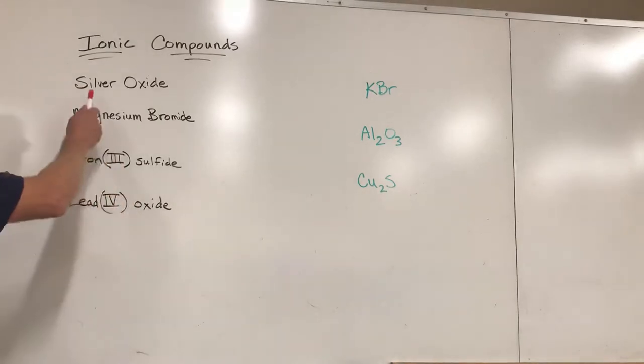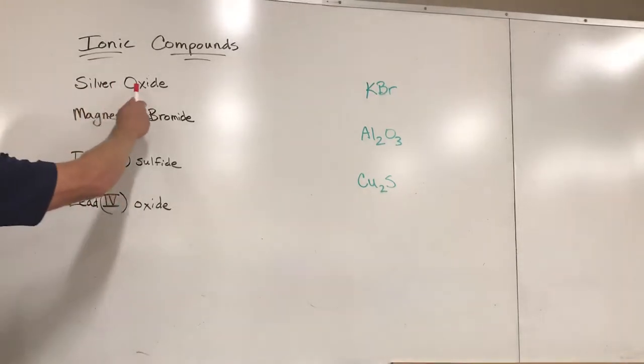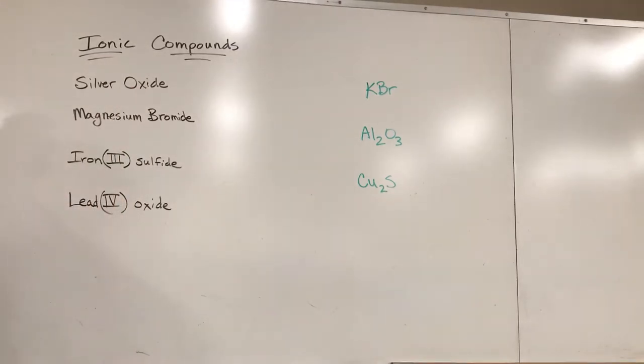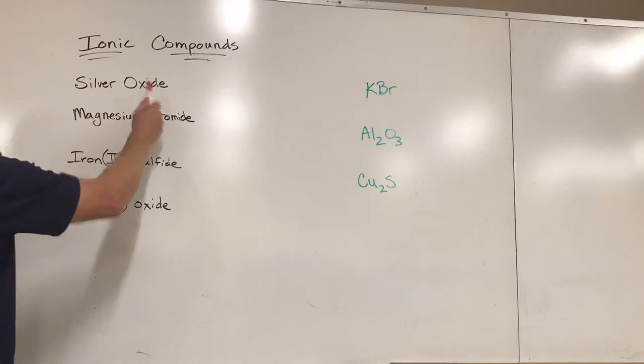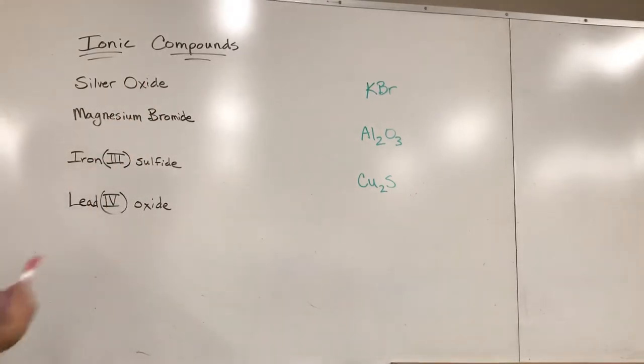The first thing we want to do is identify the metal, which is first. That's always going to be our positive ion. Then the non-metal, which is second, that's always going to be our negative ion. This is the cation, this is the anion - those are other words for positive and negative ions.